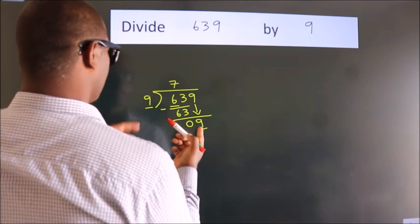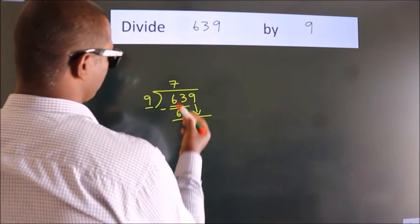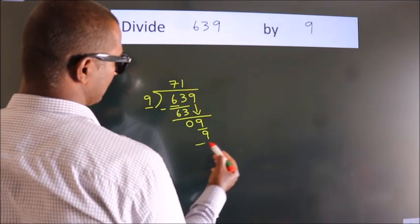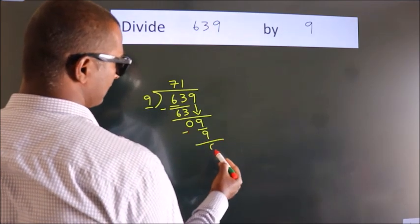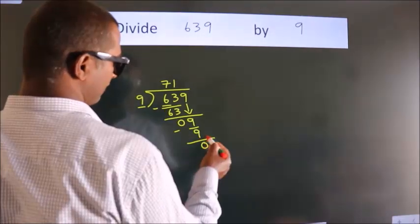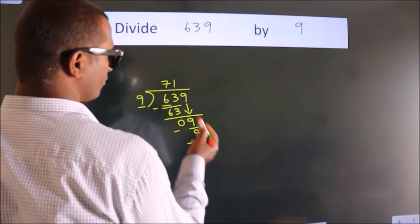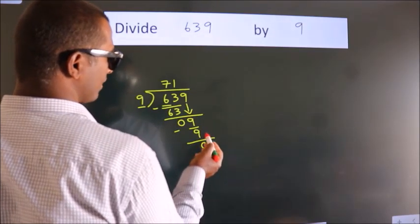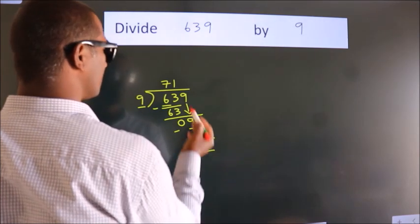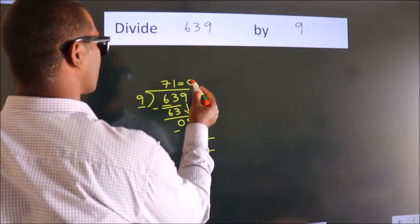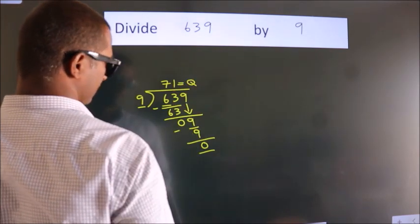When do we get 9 in the 9 table? 9 times 1 is 9. Now we subtract, we get zero. After this, no more numbers to bring it down, and we got remainder zero. So this is our quotient, 71.